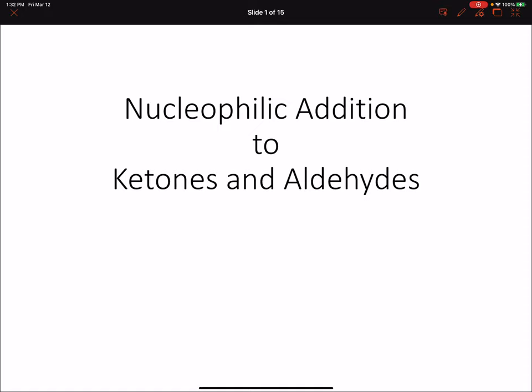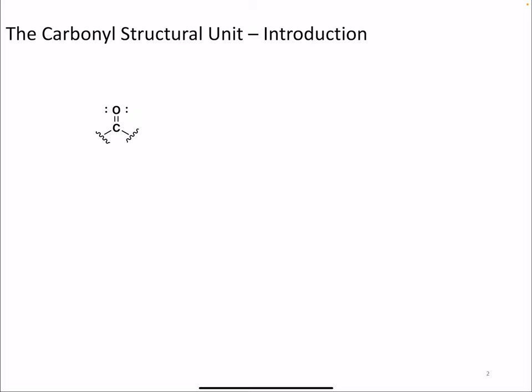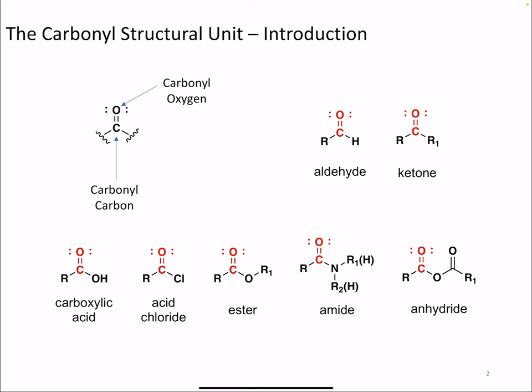The carbonyl structural unit is the key component of the ketone and aldehyde functional group. It has two parts: the carbonyl carbon and the carbonyl oxygen. The carbonyl structural unit is found in a wide range of functional groups - aldehydes and ketones, which will be the focus of this video, but also carboxylic acids, acid chlorides, esters, amides, and anhydrides, which we will examine in future videos.